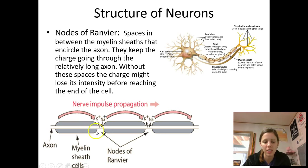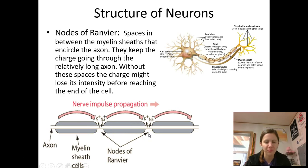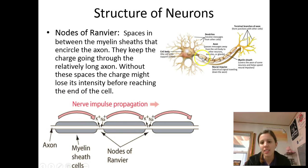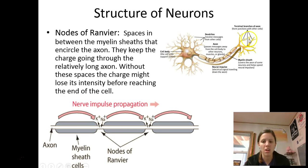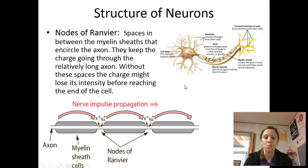What a node of Ranvier does is it allows more ions to come in to keep the charge strong throughout the whole neuron. Basically, if the front of my neuron receives the information that I've stubbed my toe, it doesn't die halfway down the axon — because of these little junctures, the charge stays strong all the way through until it splits out of the terminal branches.